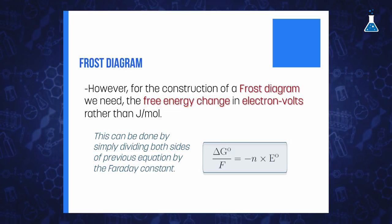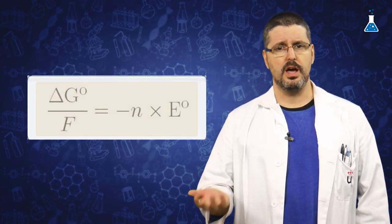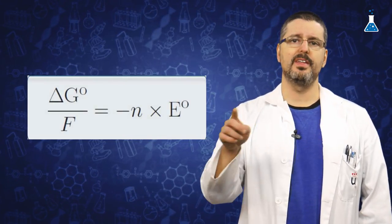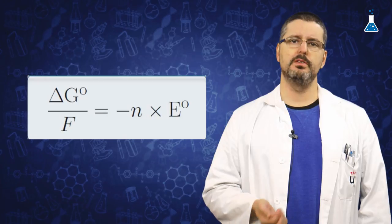In that way, for a one electron process, the difference between two energy levels gives us directly the oxidation or reduction potential. In order to obtain free energy in electron volts as units, we divide both sides of the equation by the Faraday constant to give the following relationship.